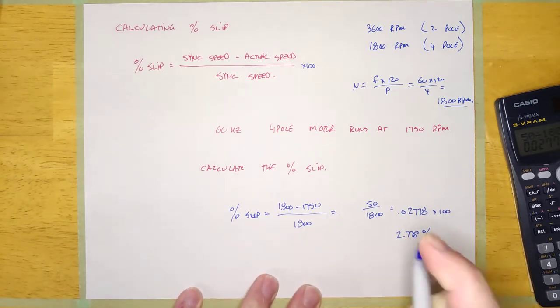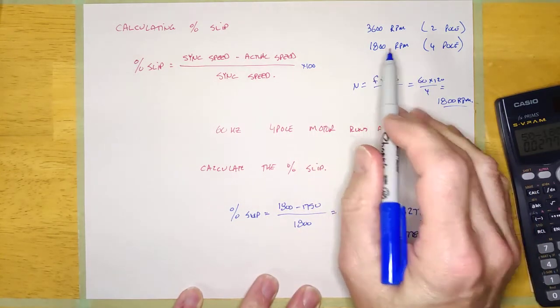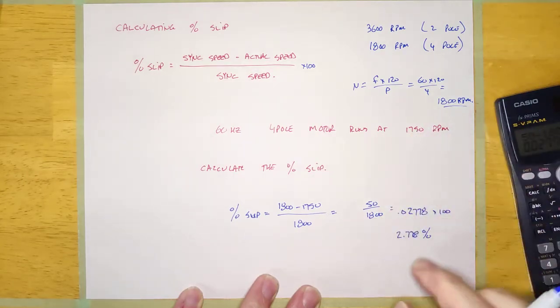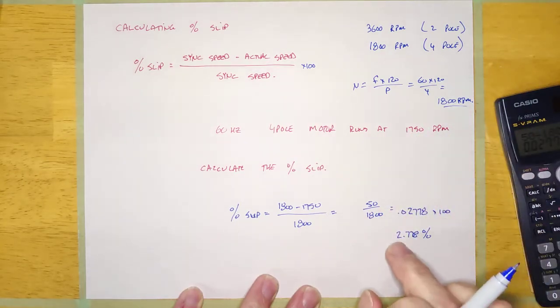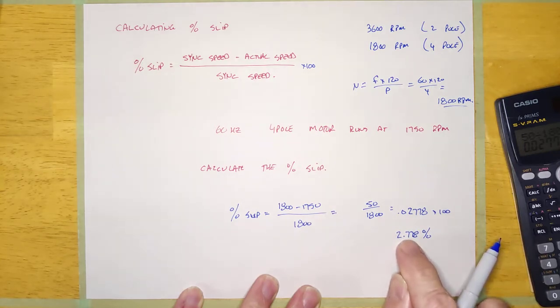Because at no load, it's going to be running at really close to 1,800, very close. And at full load, it's going to be running at 1,750. And that range is 2.778%. And so if you look at a motor, the lower the percent slip is, the better the motor is, really. It's going to have a more constant speed.